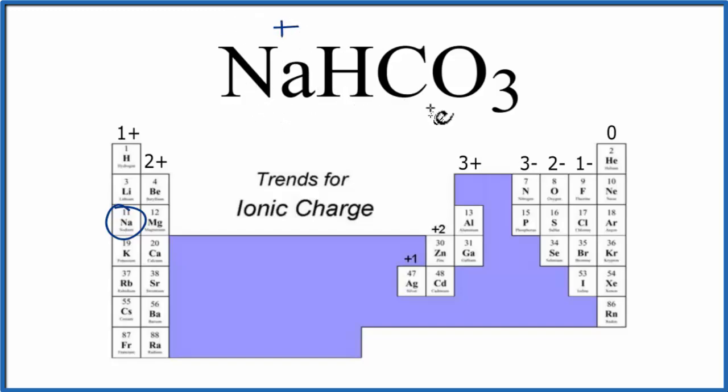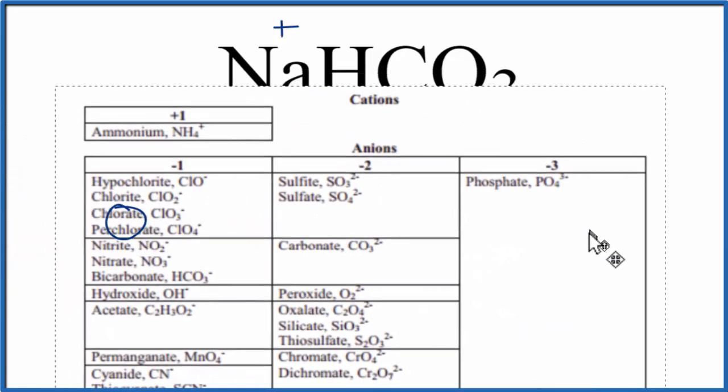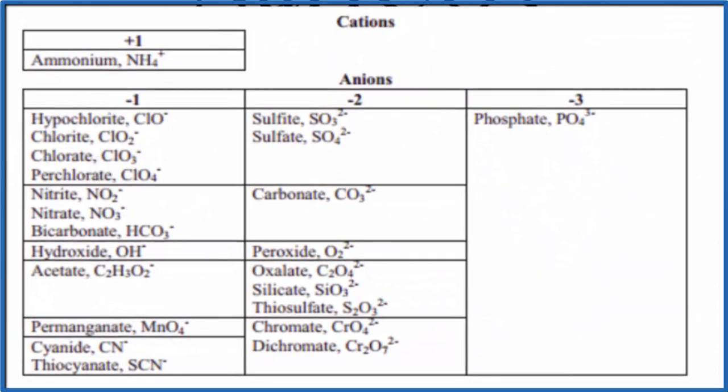For HCO3, that's actually a polyatomic ion—a group of non-metals bonded together in an ion that stays together. If you haven't memorized that it's the bicarbonate ion, you can look it up on a table of common polyatomic ions. Some teachers let you use this; others want you to memorize it.